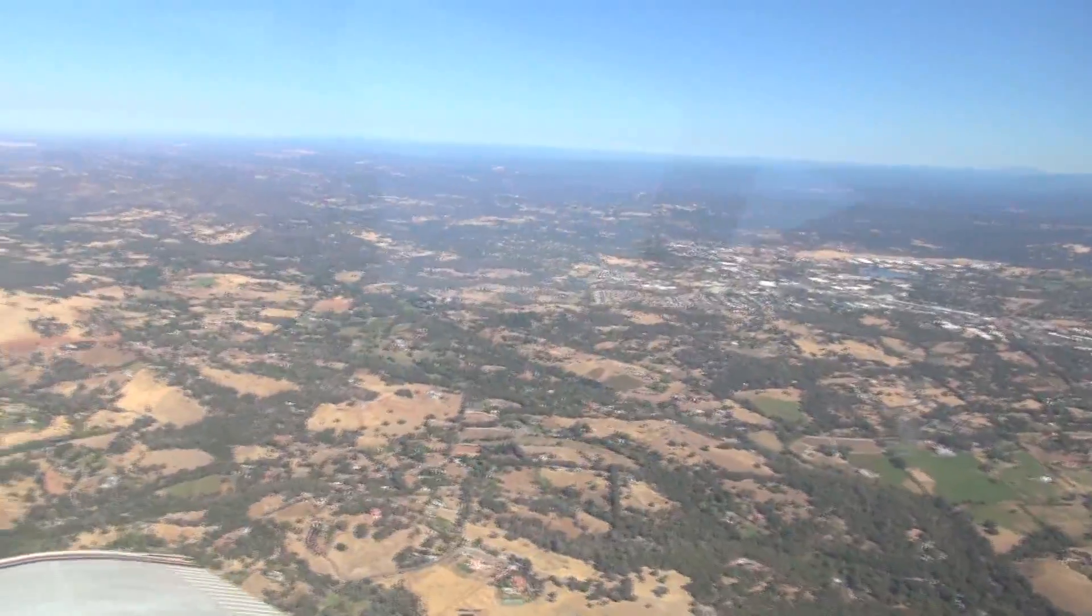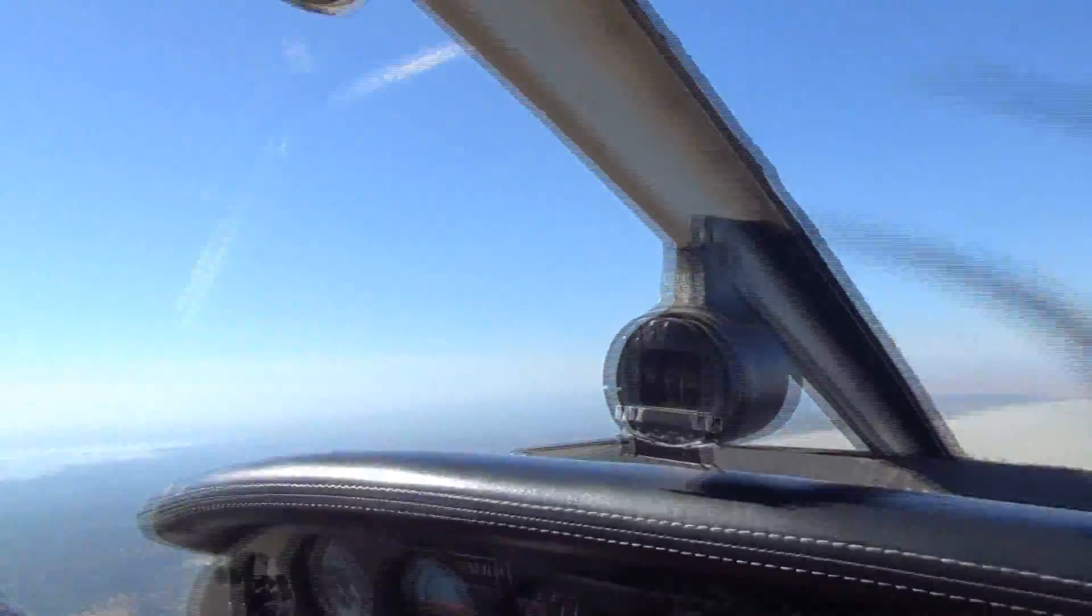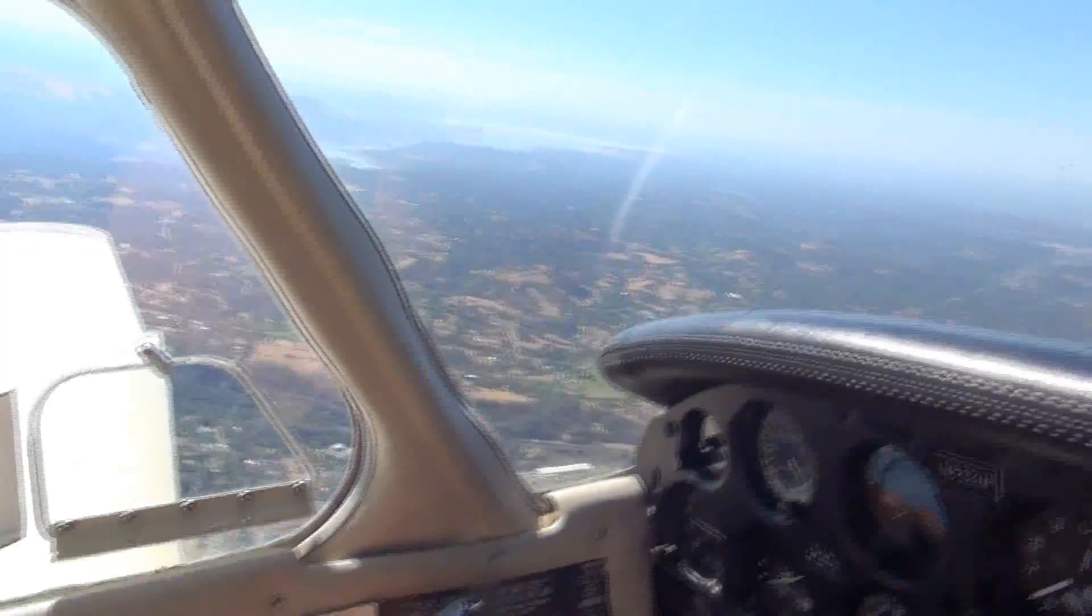There's a Cessna coming in on the left 45 to Auburn. We can see the Sacramento Valley today. A little hazy out here.